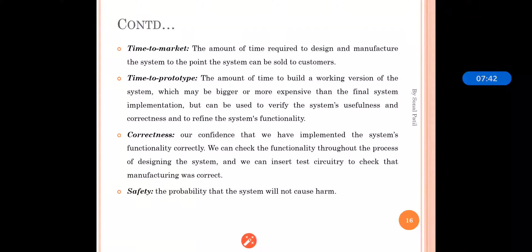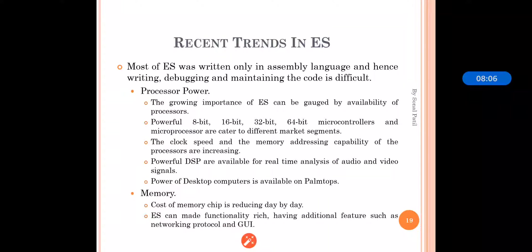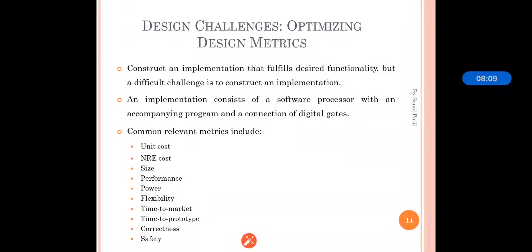Safety is the probability that the system will not cause any harm. Whenever we are using a system for any particular output or job, it is necessary that the system should not cause any harm. These are the various design challenges and metrics that are generally encountered when designing an embedded system.